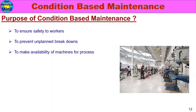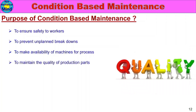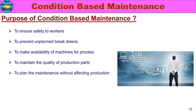Third, to make machines available for the manufacturing process. That's why production is done because the machine is ready. Fourth, to maintain the quality of the production parts, because if the machine condition is good, the production quality is good.